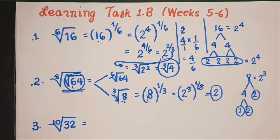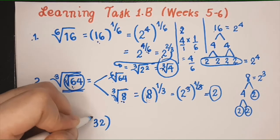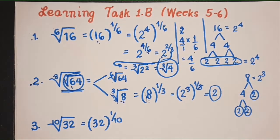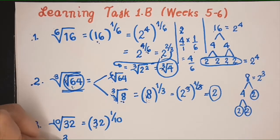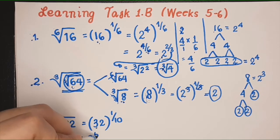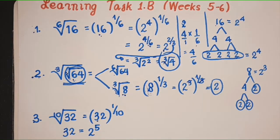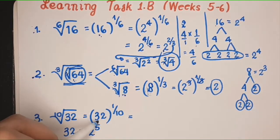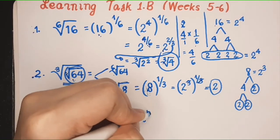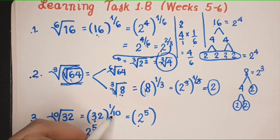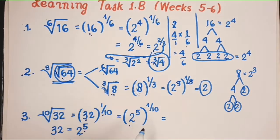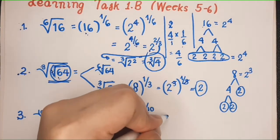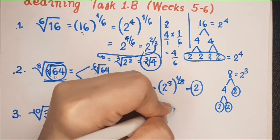What about number 3? Again, our method: express this into rational exponent form — 32 raised to 1 over 10. Then find the prime factors of 32. Please verify that 32 is equal to 2 raised to 5: 2 times 2 is 4, times 2 is 8, times 2 is 16, times 2 is 32. I'm going to replace 32 by 2 raised to 5, and copy 1 over 10. You have a power raised to a power, so multiply them — you will get 2 raised to 5 over 10.